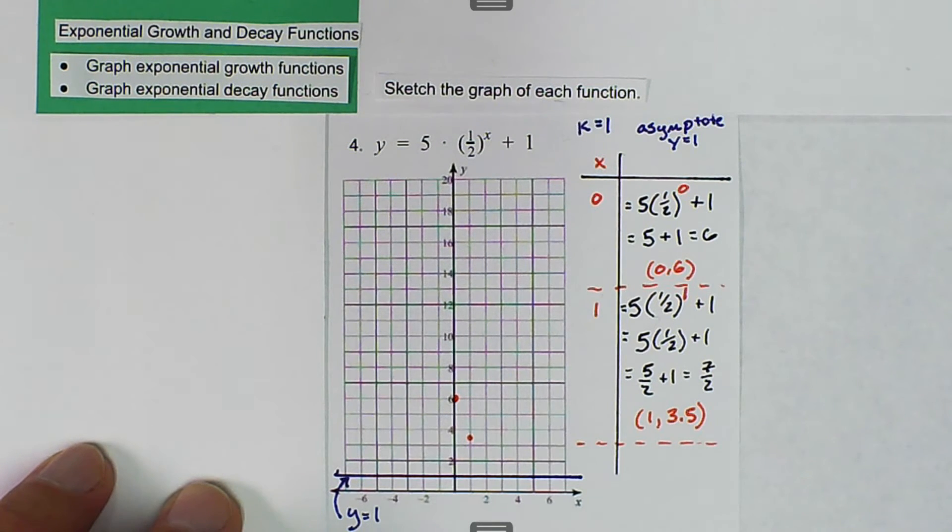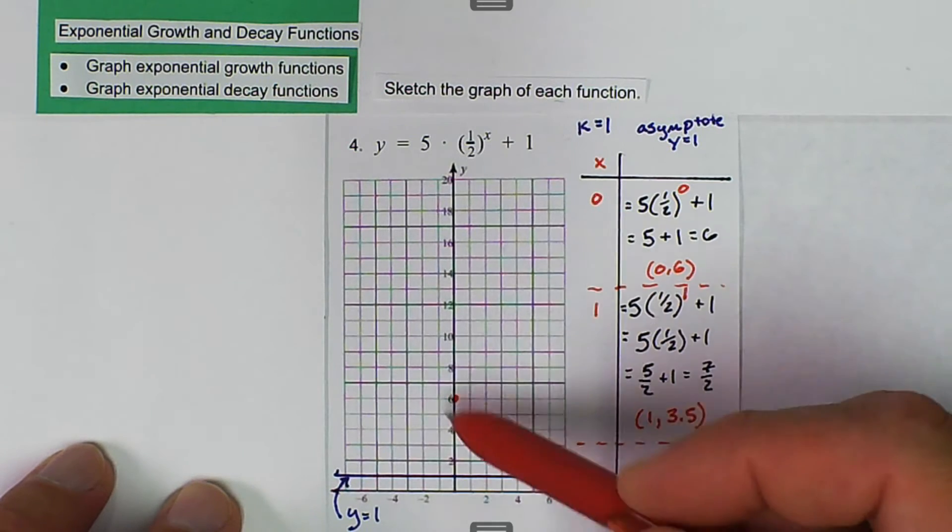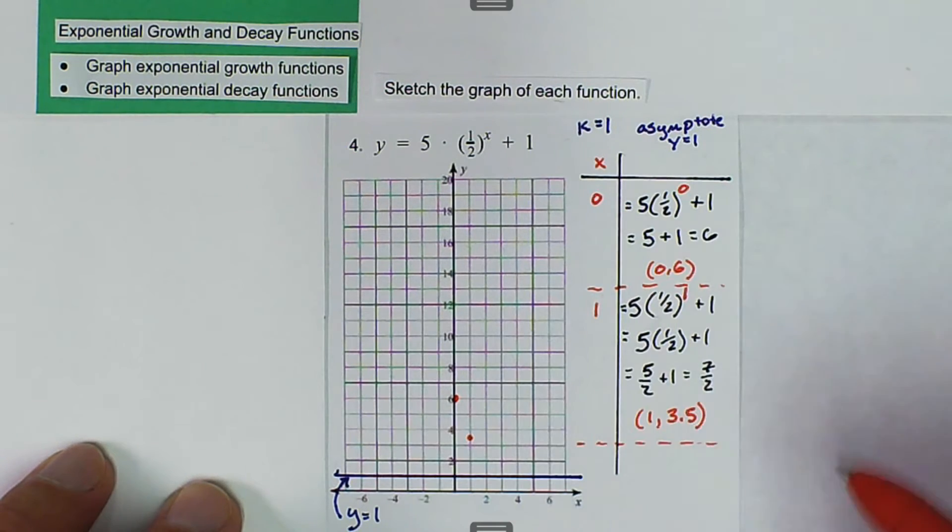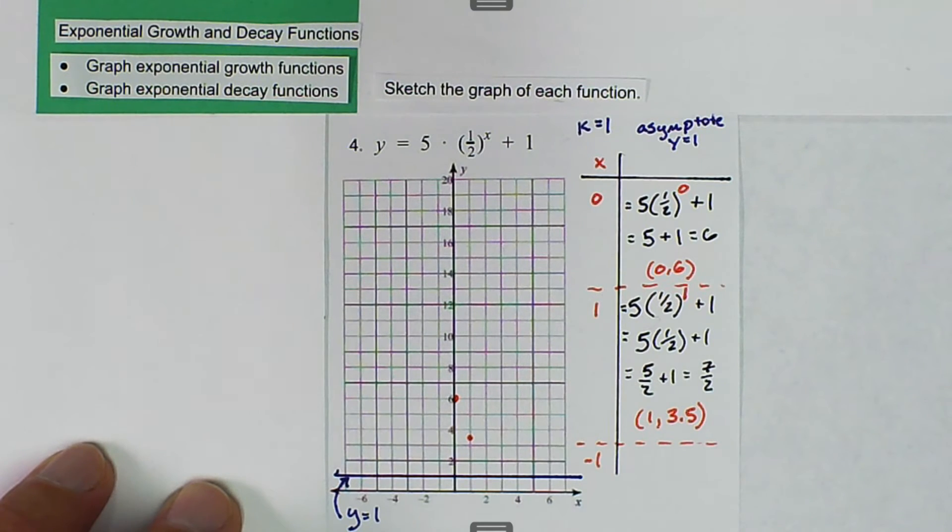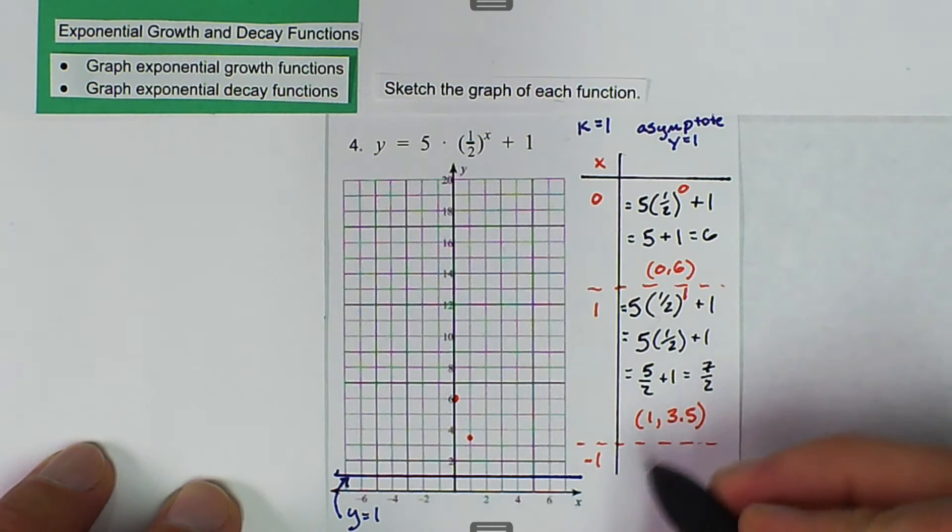And the next one that I want to do is I want to do 1 to the left. So I'm going to pick negative 1. So I'm going to substitute in negative 1 and use the negative exponent rule. That will help me see what's going on there. So again, it's 5 times 1 half. Then we're going to say plus 1.